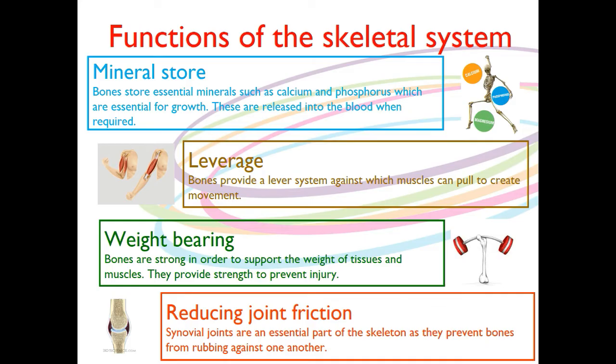The next one is leverage, which is really important when we're thinking about sporting actions. Bones provide a lever system against which muscles can pull to create movement. Imagine if we didn't have these long bones creating the leverage — essentially you'd have your hand exactly by your shoulder, which wouldn't be a very powerful movement. What we're saying with leverage is it's going to increase the force of any moment of motion — think about a turning force, it increases the amount of force we have.